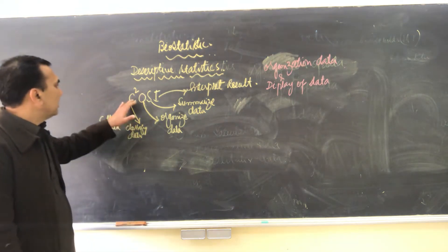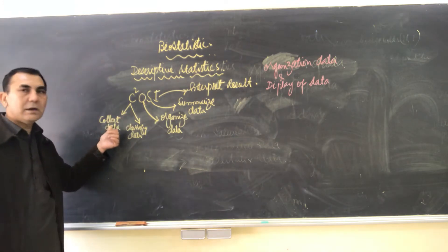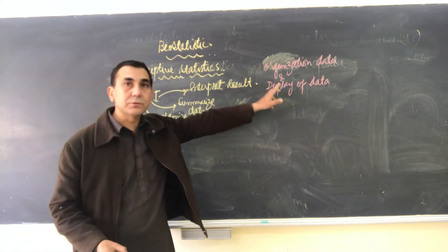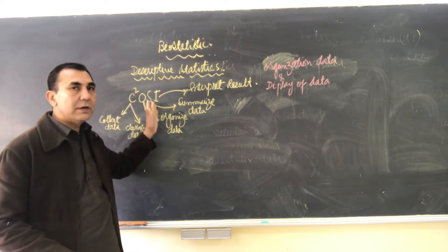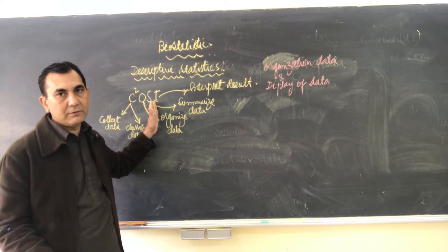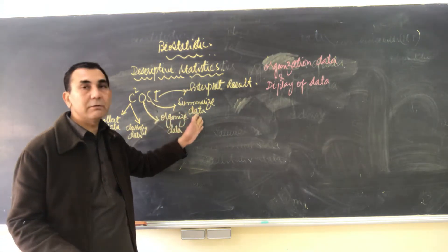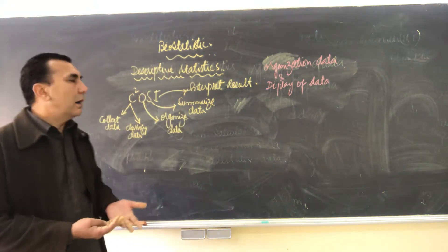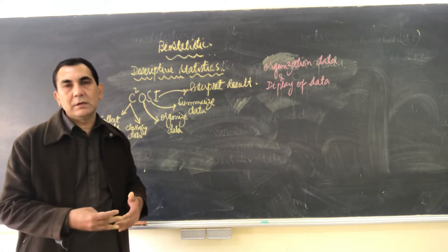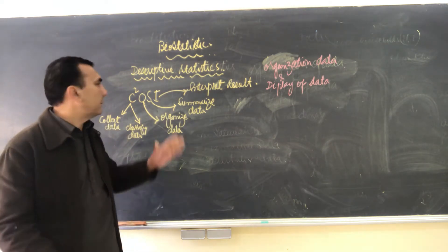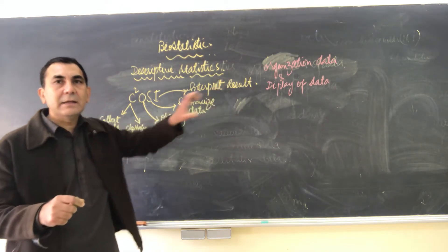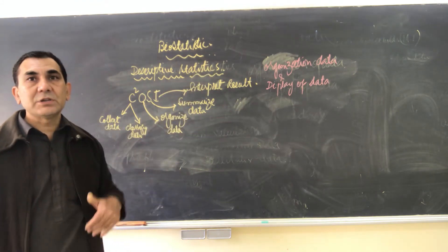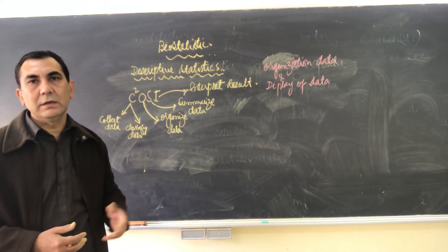As we learned in the definition of statistics, the first step is to collect the data, the second is to classify the data, and then we organize the data — which we will learn today. After organizing, we summarize the data using different types of statistical tests or frequency tables, describing the numbers, proportions, and percentages, then come up with concrete results and interpret them.